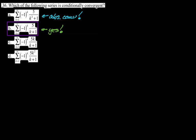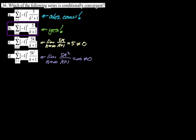For choice C, taking the limit gives 5k over (k + 1) → 5, which is not 0, so it diverges whether or not it alternates. For choice D, the limit is actually infinity — and since (−1)^k times something that doesn't go to 0 still doesn't go to 0, it diverges too. So choice B is our final answer.